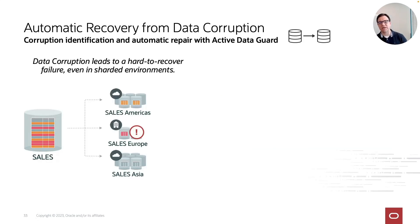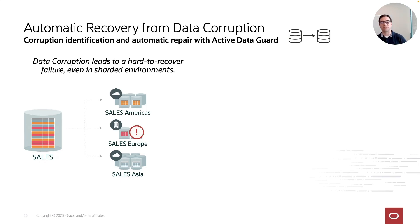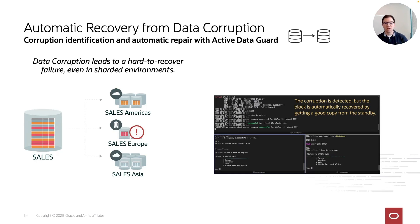Despite sharding's benefits, corruption remains a problematic issue — a shard cannot automatically recover itself from corruption. Luckily, Active Data Guard has a feature called corruption identification and automatic repair. If you protect your shard with Active Data Guard, you can not only identify the corruption but repair it automatically, so the shard would not appear corrupted to the application. Please, Ludovico, show us how corruption identification and automatic repair works with Active Data Guard.